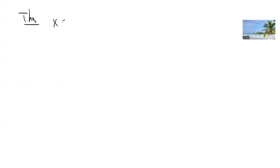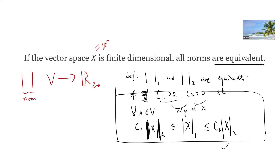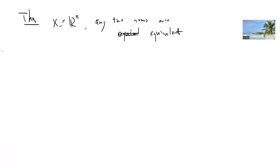So this theorem says the following: if X is R^n, then basically any two norms are equivalent. So what this means is that if you take any vector space and any two norms, you can always find some c1 and c2 such that this equivalence condition is true. Okay, so let's go through the proof.